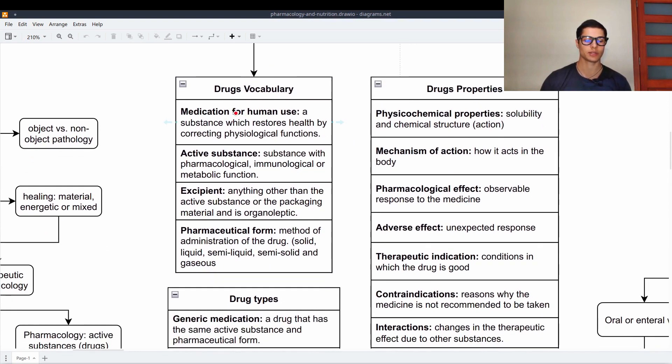Then we have some vocabulary to learn. Medication for human use is a substance which restores health by correcting physiological functions in humans. The active substance is the substance with pharmacological, immunological or metabolic function inside the medication. The excipient is anything other than the active substance or the packaging material and it is organoleptic. Then we have the pharmaceutical form which is the method of administration of the drug. It can be solid, liquid, semi-liquid, semi-solid and also gaseous.